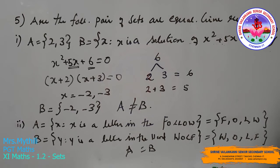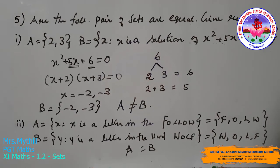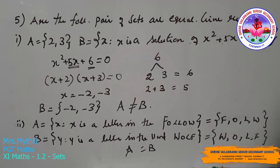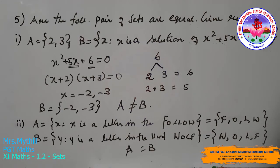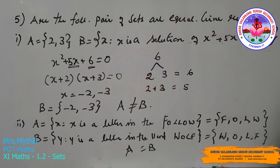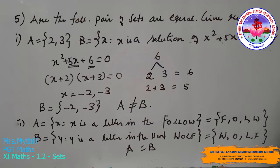Second: A = {x : x is a letter in the word FOLLOW}. Since L and O are repeated, we write each only once: A = {F, O, L, W}. B = {y : y is a letter in the word WOLF} = {W, O, L, F}. The letters in both sets are the same, so A = B — they are equal sets.